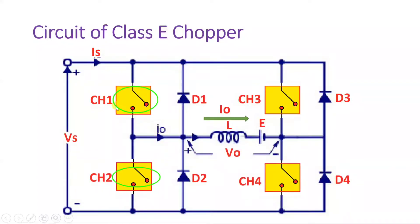There are important constraints to observe: we cannot turn on Switch 1 and Switch 2 simultaneously, as that will short-circuit the output. Similarly, we cannot turn on Switch 3 and Switch 4 simultaneously, as that will short-circuit the supply voltage VS. So we must not turn on these two switch pairs at the same time.